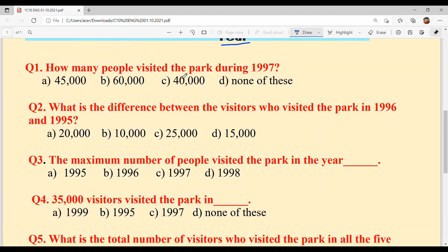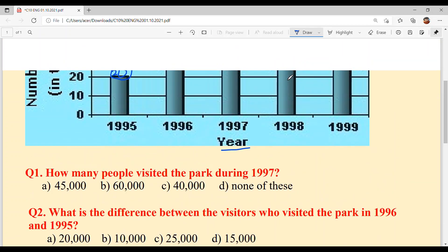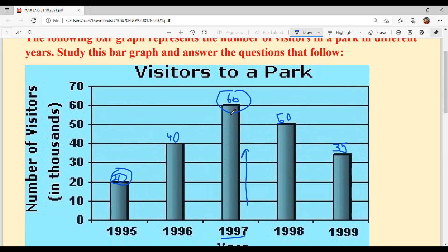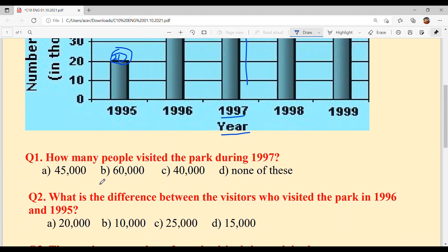Question 1: How many people visited the park during 1997? How many people visited in 1997? Look, it's 60,000. Option B.